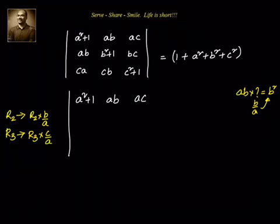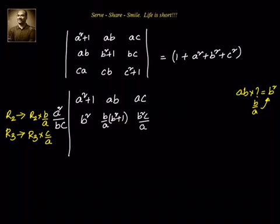Now if we are doing that, we have to divide accordingly — so outside we will have a²/(bc). In the second row, multiplying by b/a gives: (b/a)(b² + 1) and b²c/a. In the third row, multiplying by c/a gives: c², (c/a)(cb), and (c/a)(c² + 1).